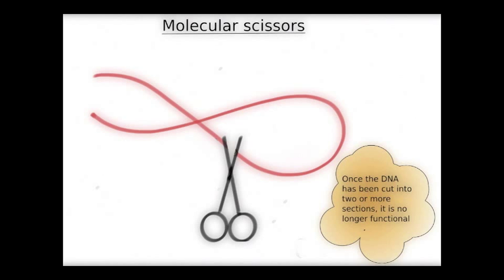Once the DNA has been cut into two or more pieces, it is no longer functional. A lot of cells, for example human cells, use restriction enzymes to disable DNA from foreign microorganisms like bacteria and viruses.